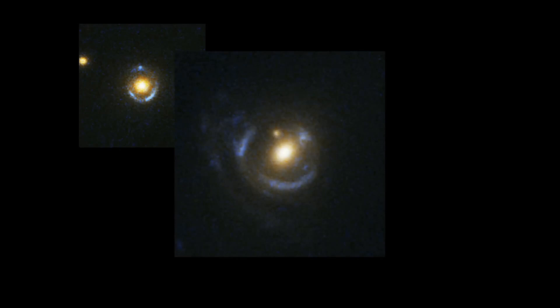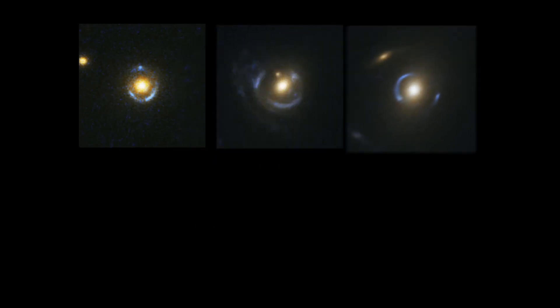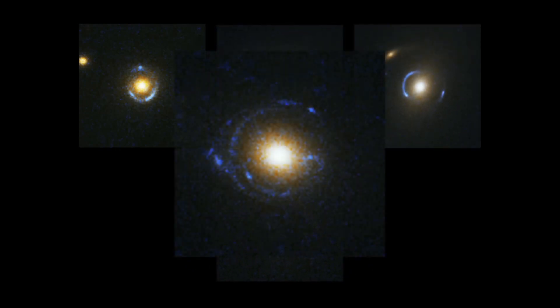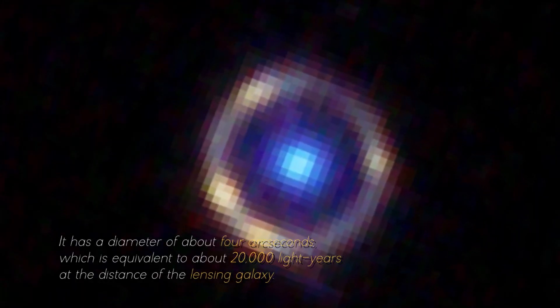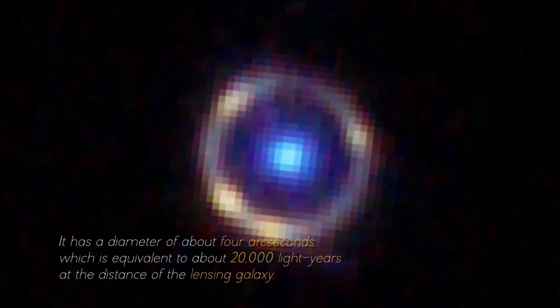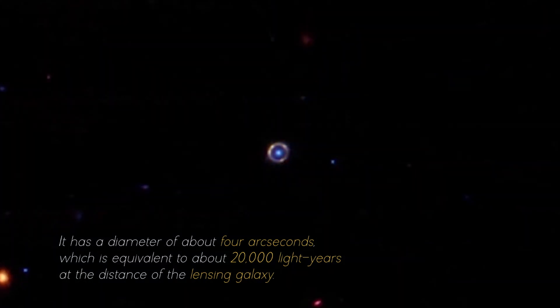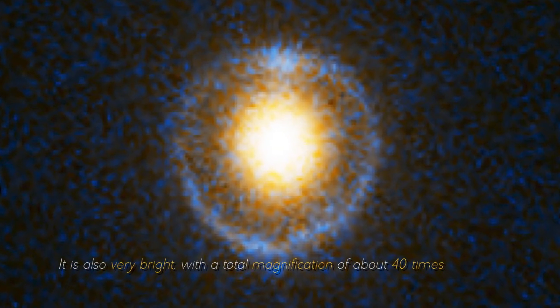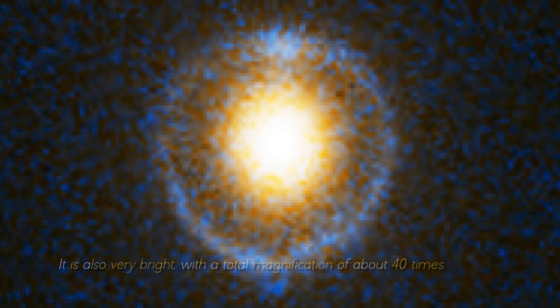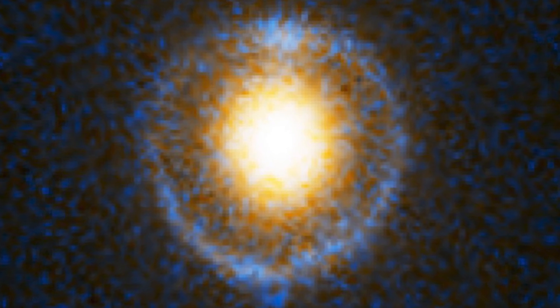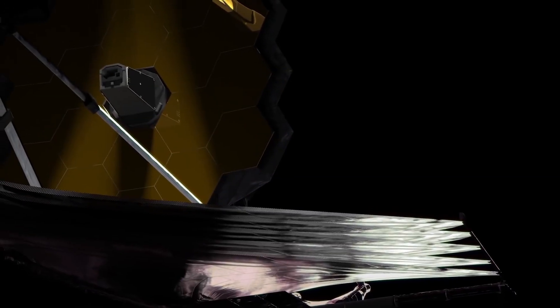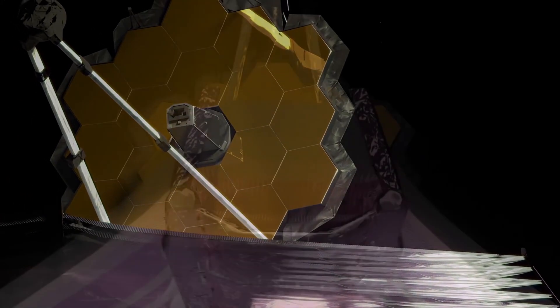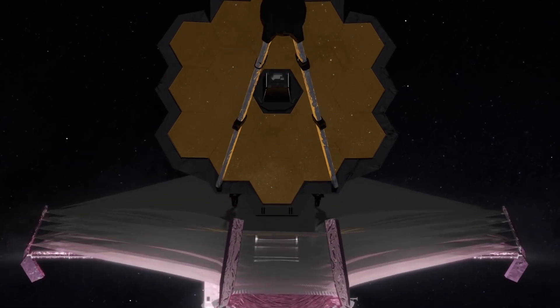In the case we are exploring, the Einstein Ring surrounding this galaxy is one of the most complete and symmetric ever observed. It has a diameter of about 4 arc seconds, which is equivalent to about 20,000 light years at the distance of the lensing galaxy. It is also very bright, with a total magnification of about 40 times. This means that, without the gravitational influence, we would not be able to detect the galaxy at rest, as it would be too faint and small to be observed by the James Webb Space Telescope or other telescopes.